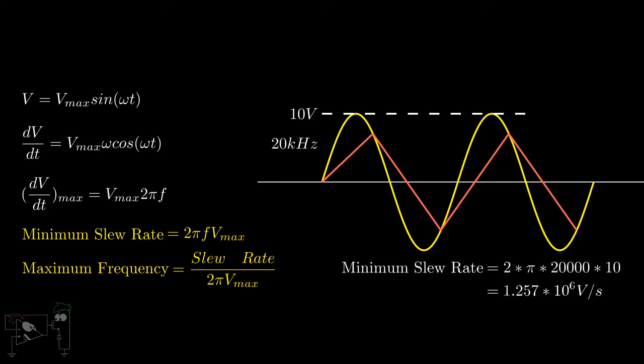That is 1.257 volts per microsecond. If the slew rate of the op-amp is greater than this value, the output will follow the input perfectly.